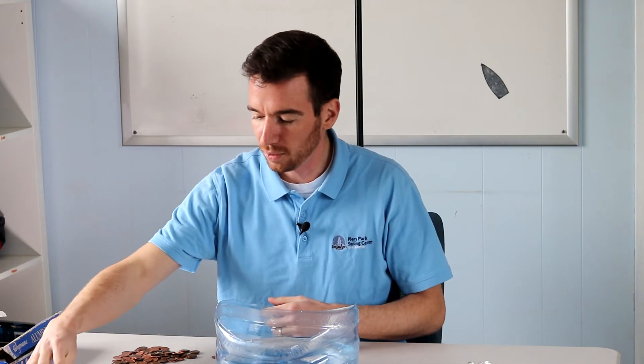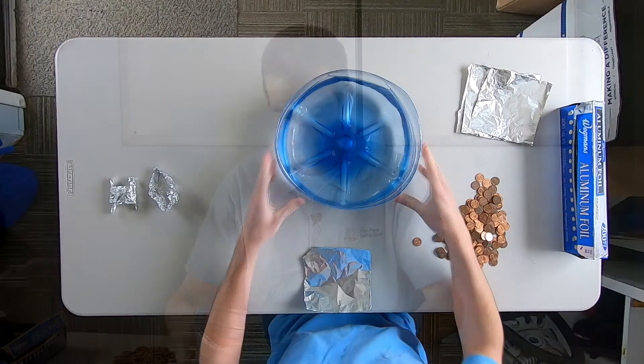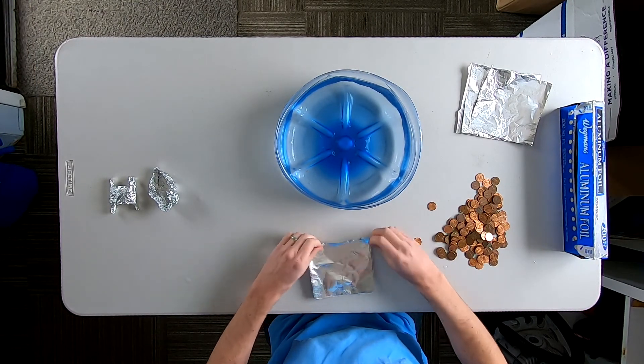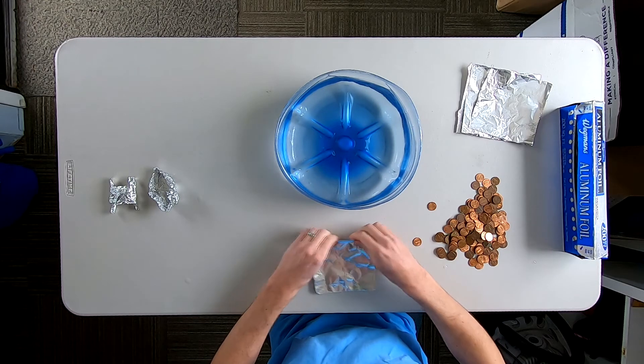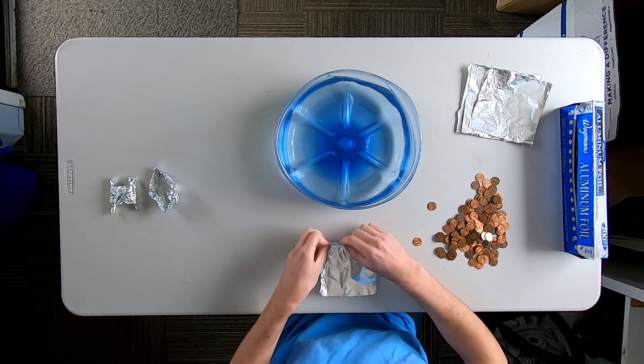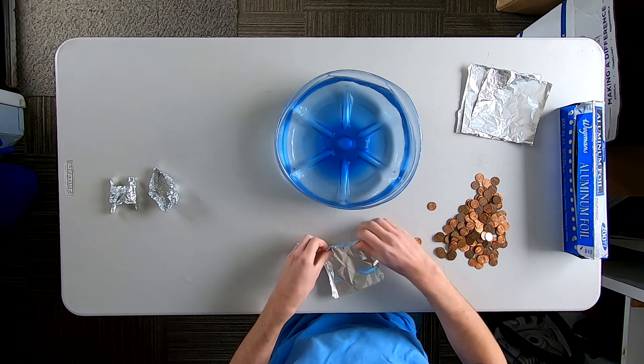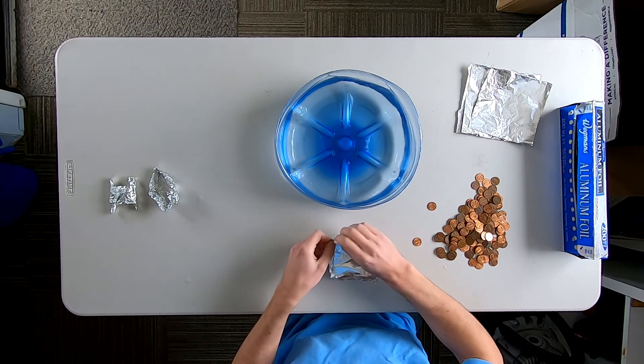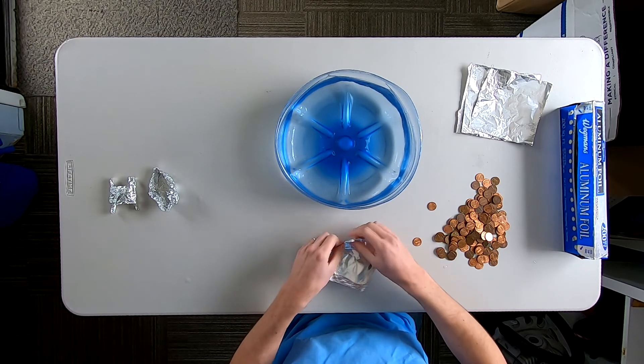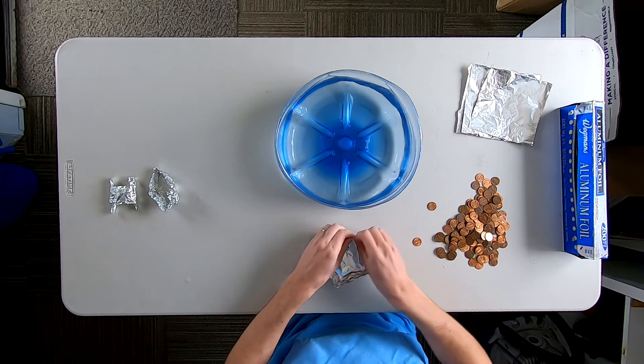Okay, for our last design, I'm going to do a raft shape. Just a square. This will displace the most water. It will have the most volume in the water. It's not going to be a fast boat, because there will be a lot of friction created, but it should hold a lot of pennies. I'm just folding up the sides.